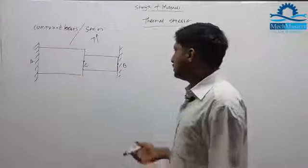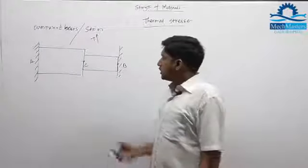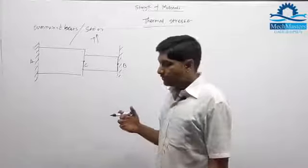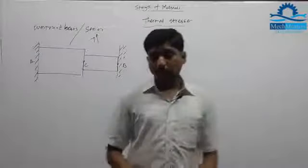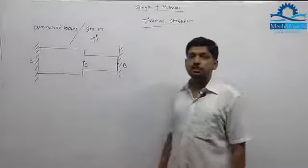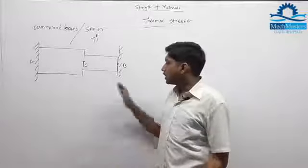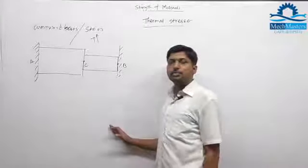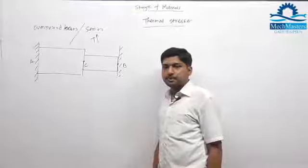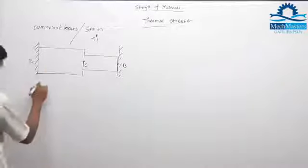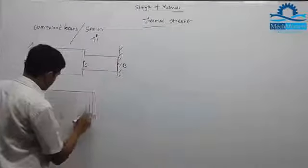To find any thermal stress, first remove one of the supports. If we remove support B at point B, we will see what happens inside the bar. To find thermal stresses, we have to introduce the support back again. So we remove the support at point B and allow the bar to expand.